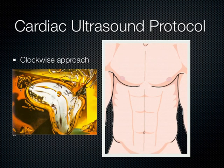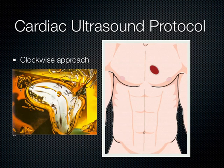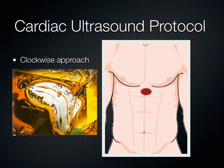A helpful protocol to remember all cardiac views is a clockwise approach: start with the indicator toward the patient's left for the parasternal long axis; rotate 90 degrees clockwise to the patient's right for the parasternal short axis; slide down to the apical 4-chamber and 5th chamber views (indicator still to the patient's right); then slide clockwise to the subcostal view. The sequence is: parasternal long, parasternal short, apical 4-chamber, apical 5th chamber, subcostal.